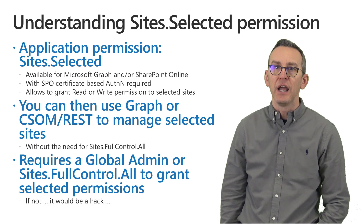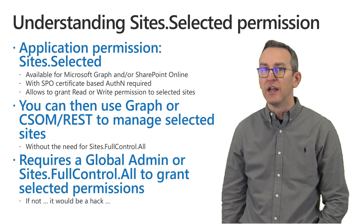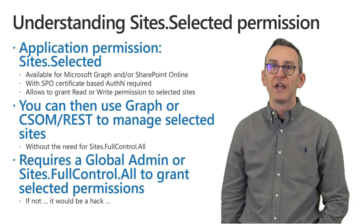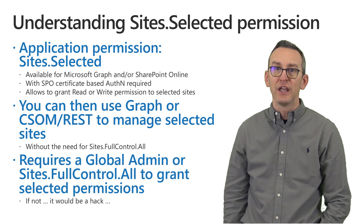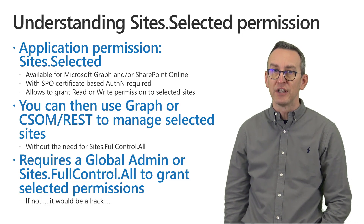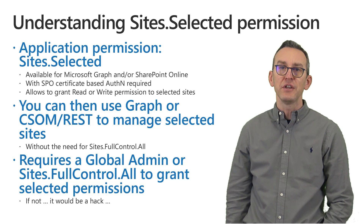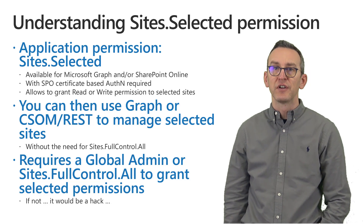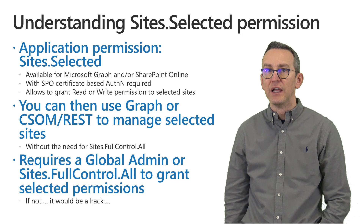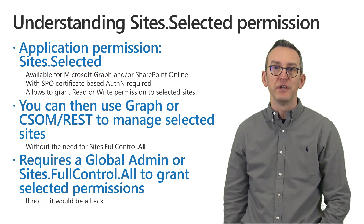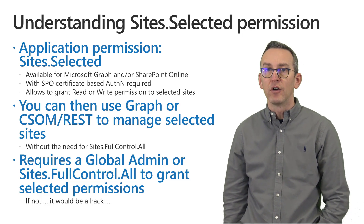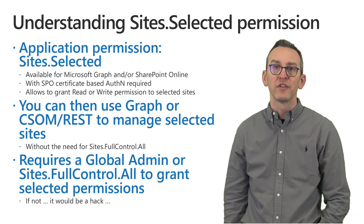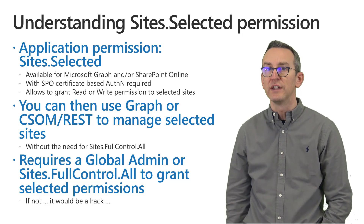When you configure site.selected for SharePoint Online, you need to get an access token with certificate authentication against Azure Active Directory. This permission is really useful whenever you want to have a set of permissions restricted to a specific site or set of site collections, rather than the whole tenant.